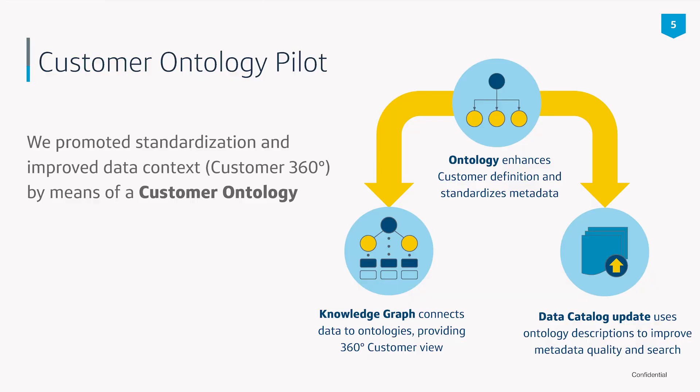The customer ontology pilot — the knowledge graph pilot — actually started about six months before the official kickoff, and that was to develop the customer ontology. We used a couple of methods: we looked at the data itself to see what business concepts were captured there, we did card sort exercises as in traditional taxonomy processes, we conducted interviews, and we iteratively developed this ontology with our customer partners.